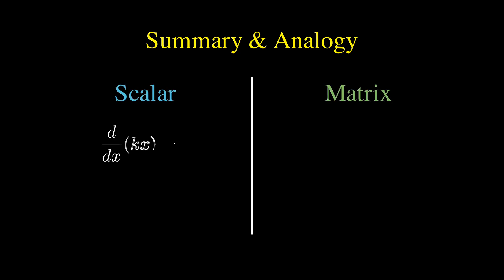To summarize, we have seen how matrix calculus operations mirror scalar calculus. The linear map Ax derives to A, just as kx derives to k. The quadratic form x transpose Ax derives to 2Ax, just as kx squared derives to 2kx.